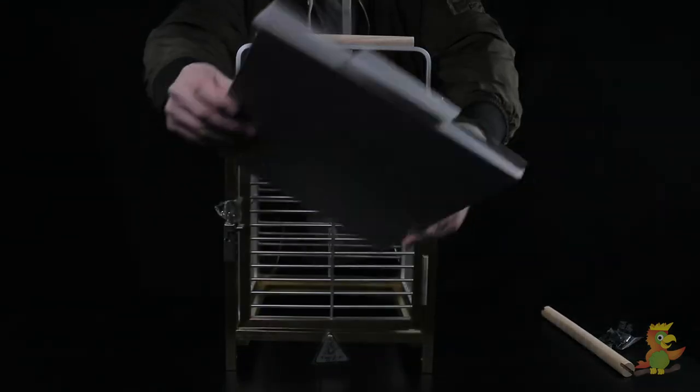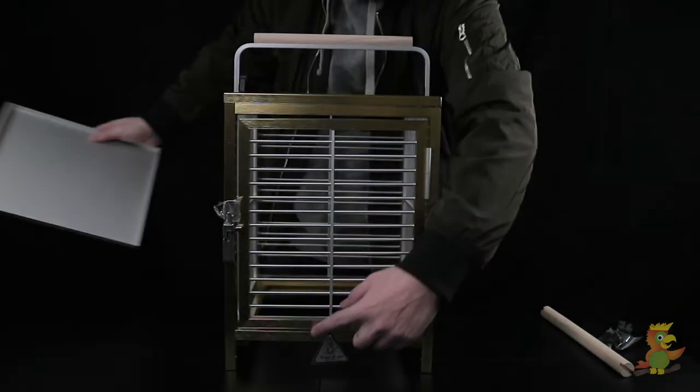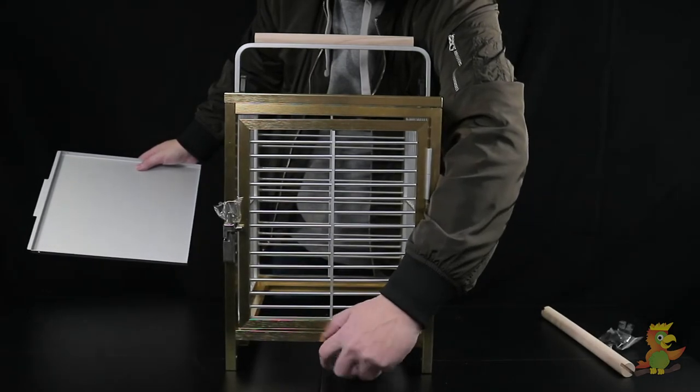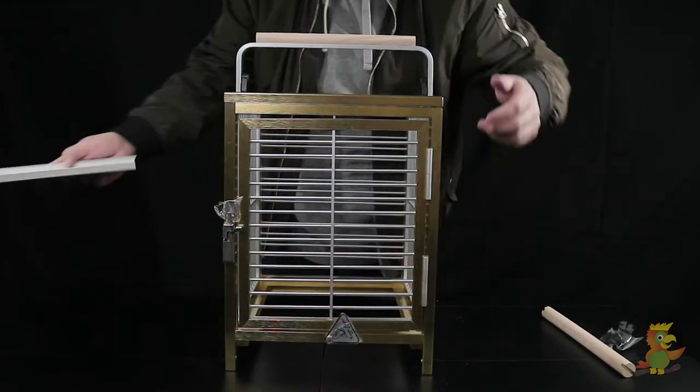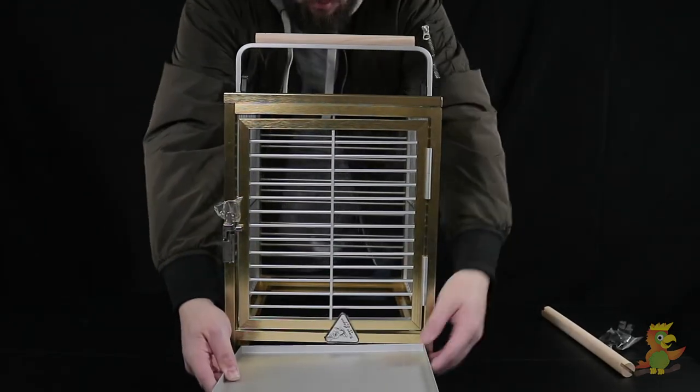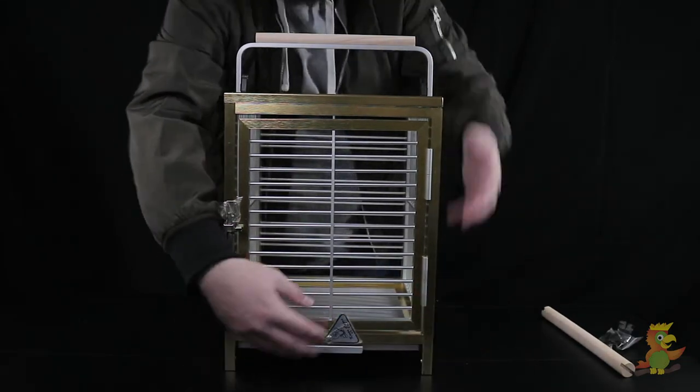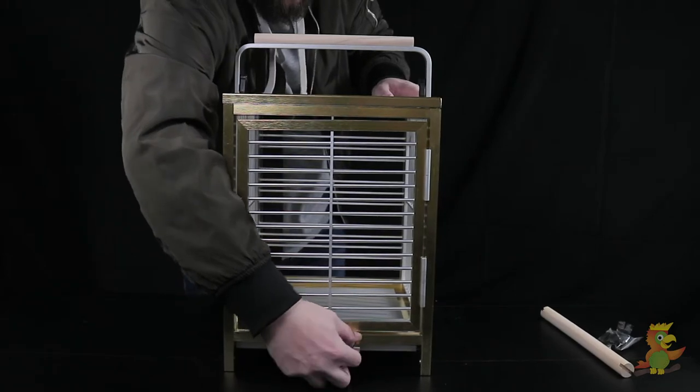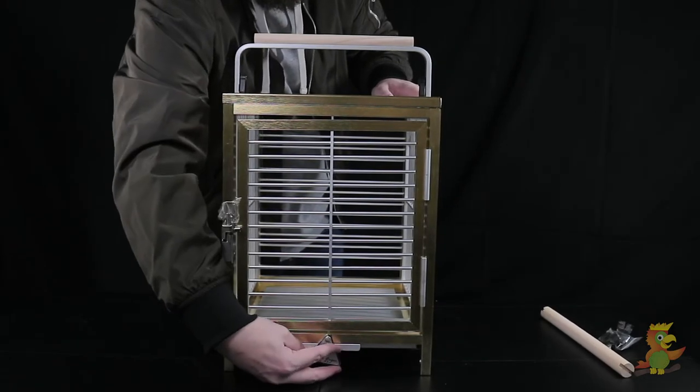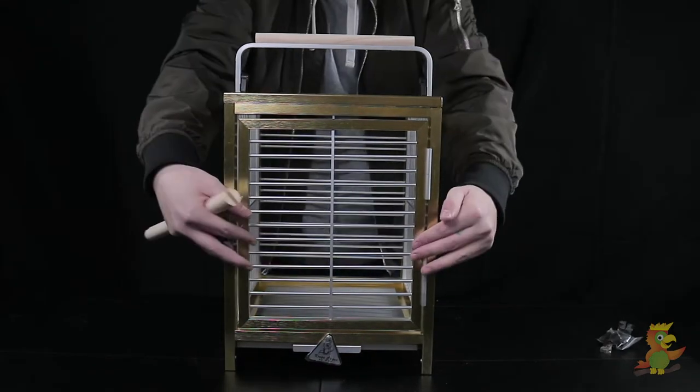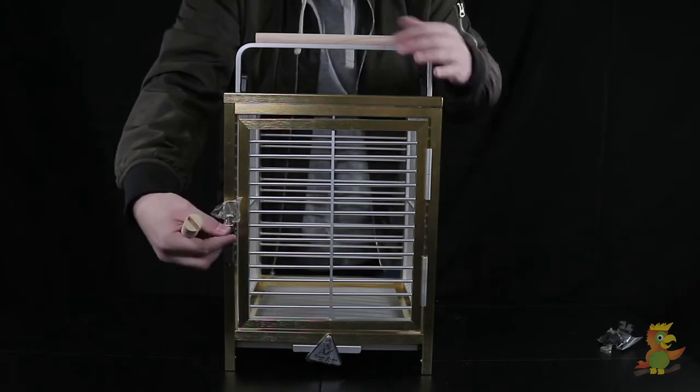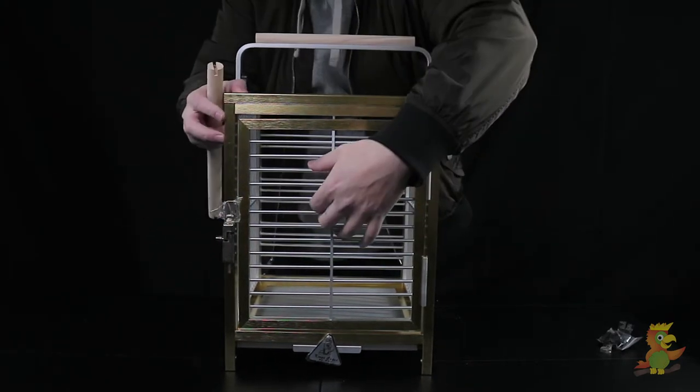The aluminum tray slides into the track after you flip up the triangle lock on the bottom. Take the pine dowel perch and place it to your desired height.